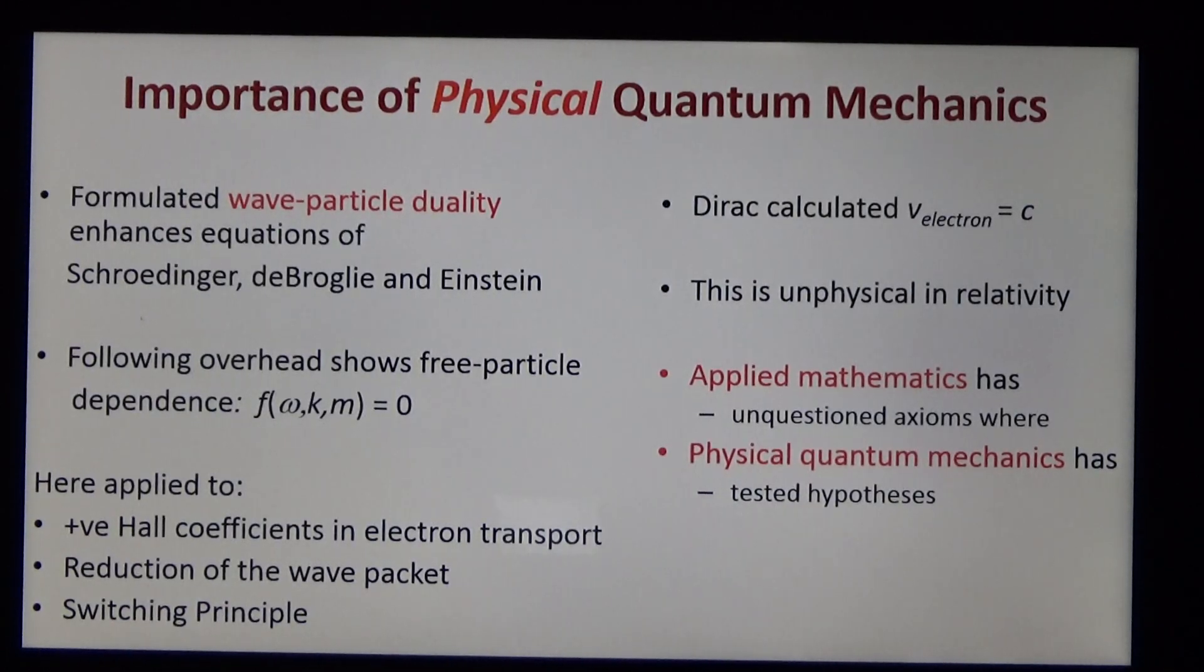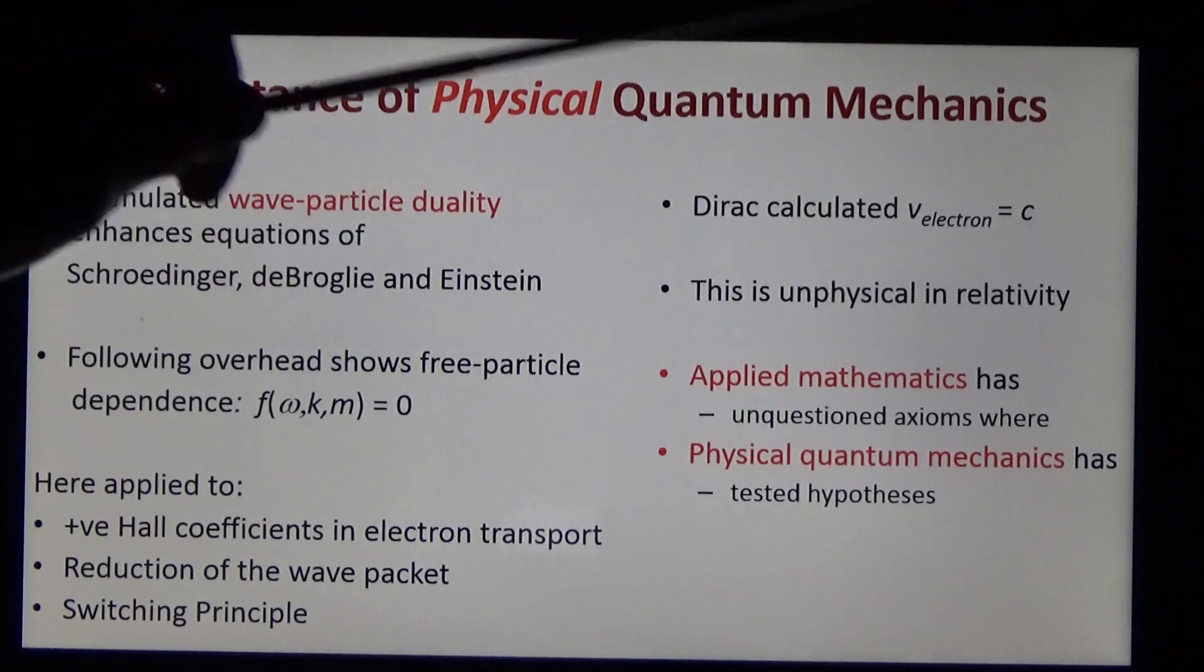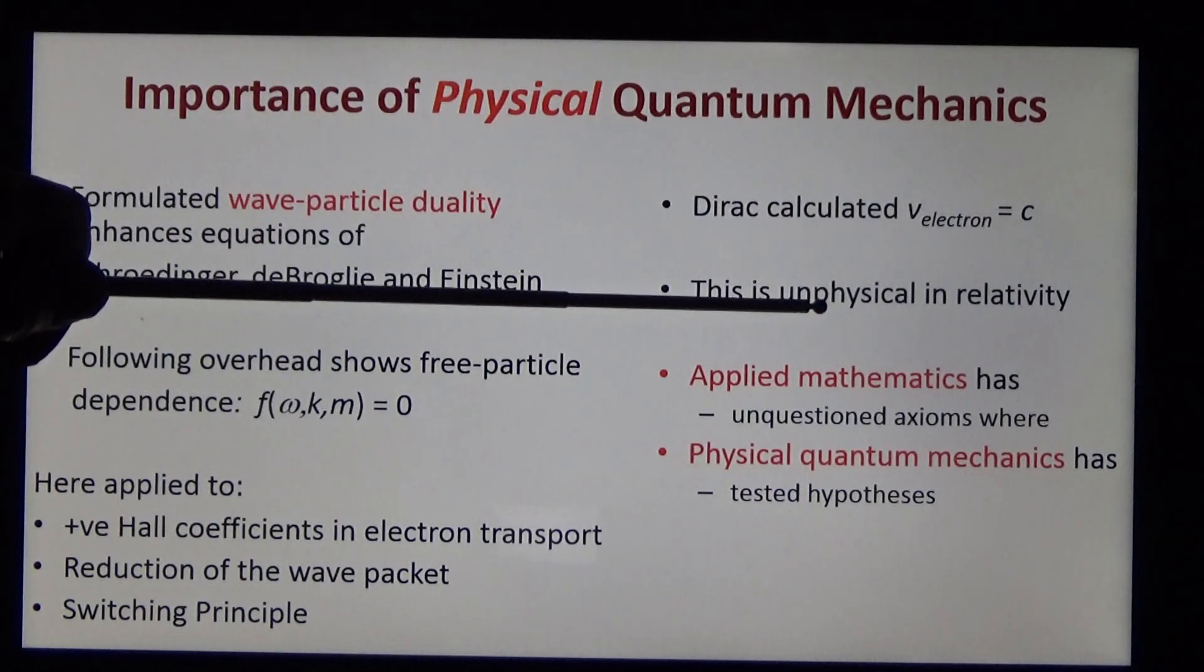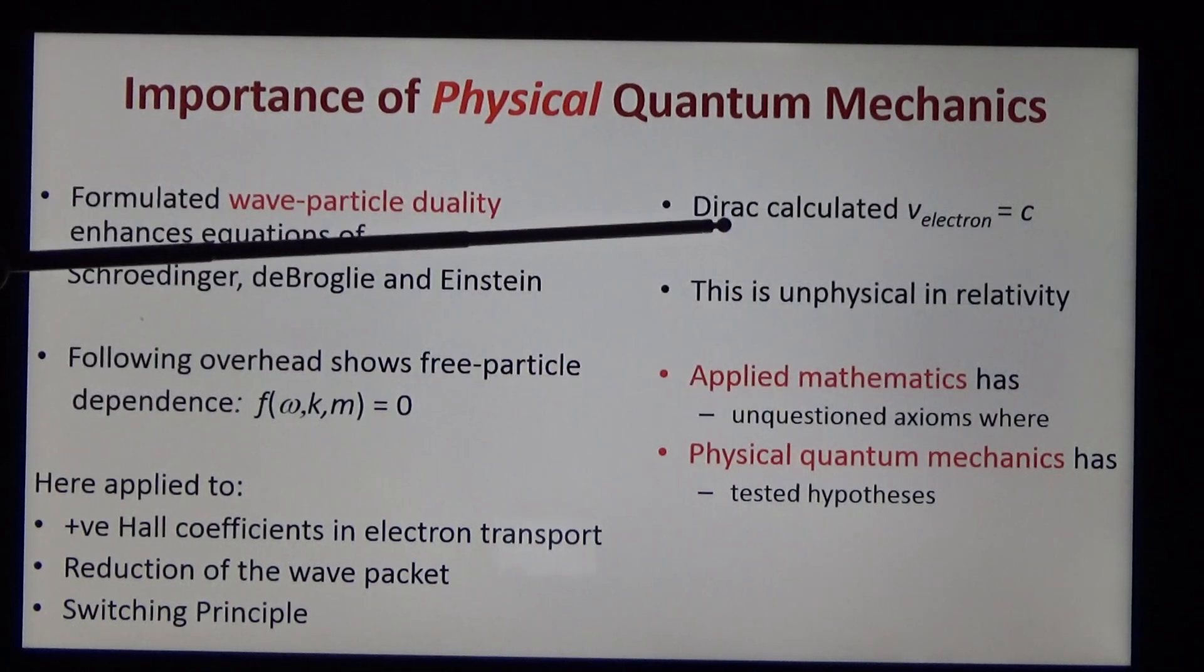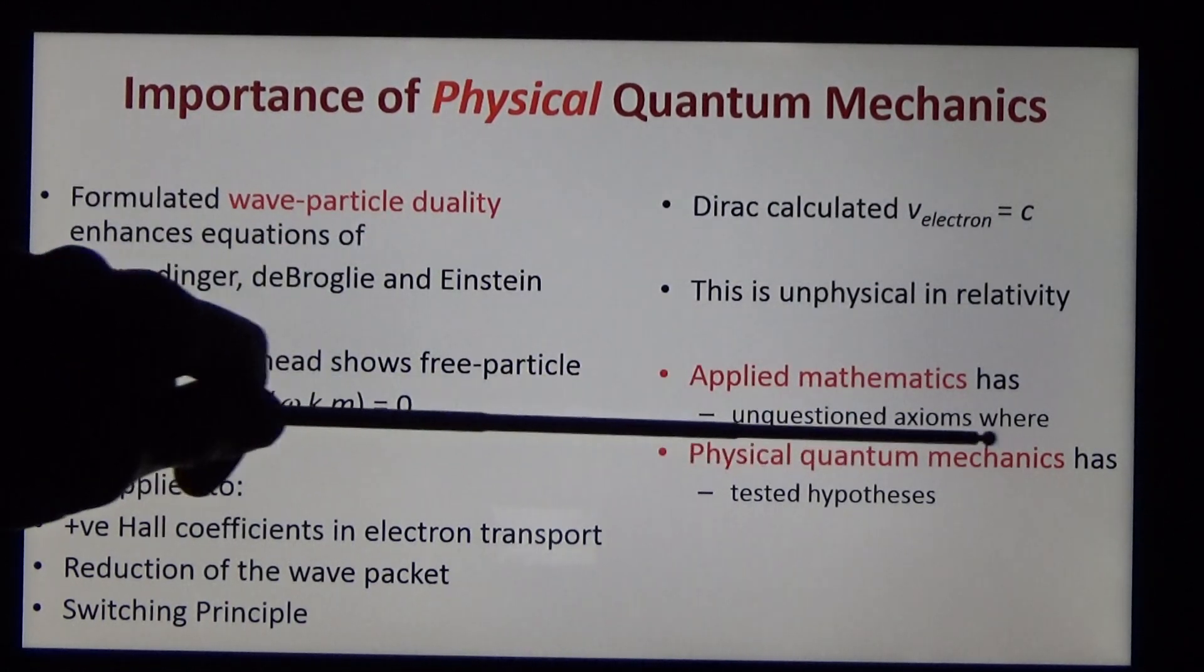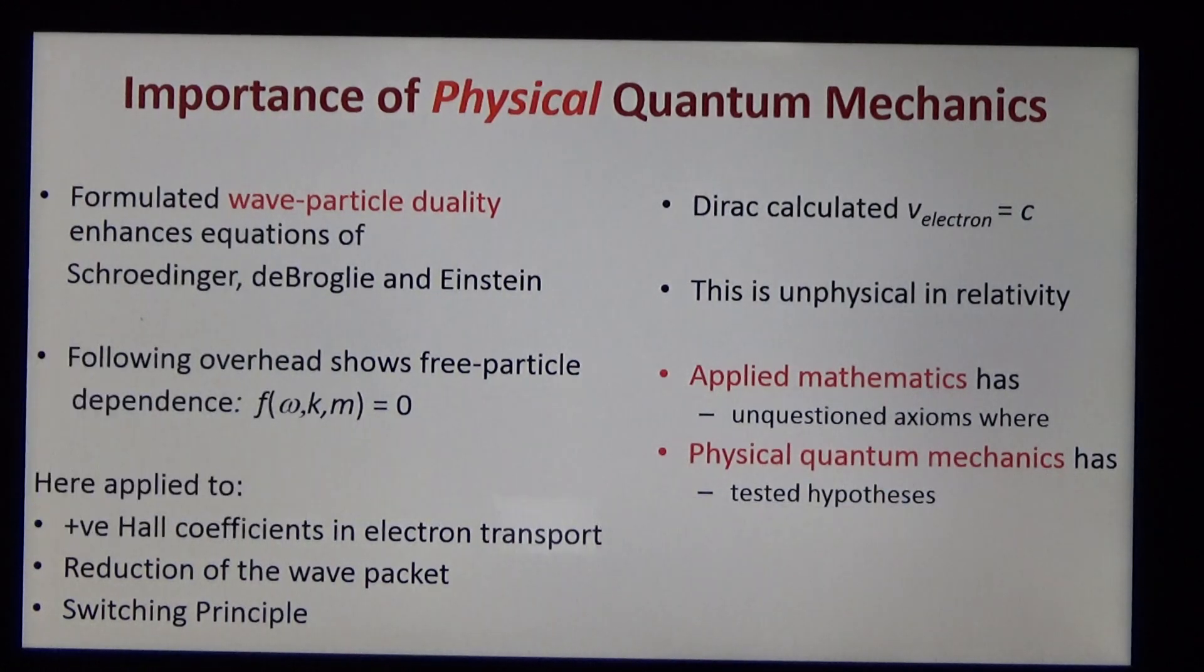Going back, Dirac calculated the speed of the electron equal to c. This is unphysical in relativity and an example of applied mathematics. By contrast, physical quantum mechanics uses tested hypotheses.